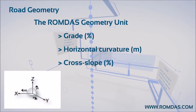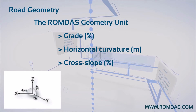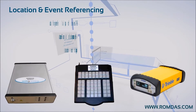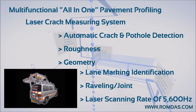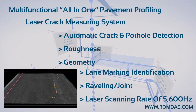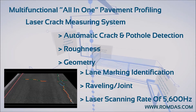Adding a ROMDIS geometry module will collect grade, horizontal curvature, and cross-slope data. The laser crack measurement system is the latest in innovative road profiling technology, and can collect the wide variety of data needed by engineers and public works departments at very high accuracy.